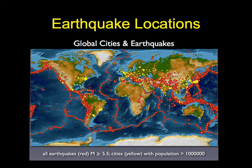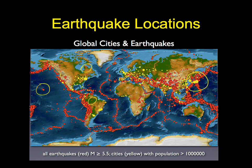A distribution map of earthquake locations in red shows they mainly cluster along plate boundaries, though some occur on passive margins or in the middle of continents. Yellow dots on the map show cities with large populations — and notably in Japan and Asia, many heavily populated cities are located very close to areas that get large numbers of high-magnitude earthquakes. Earthquakes tend to cluster along plate boundaries but not always — we can find them on passive margins or interior parts of continents.